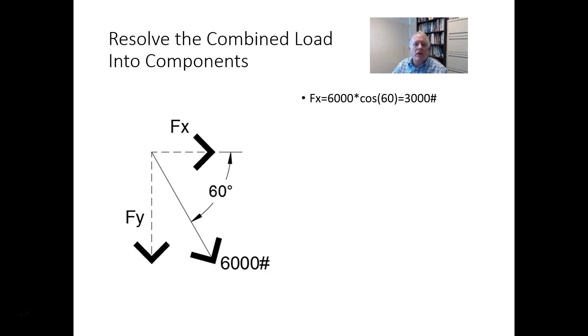So we have to calculate the horizontal and vertical components. The horizontal component is equal to the force itself times the cosine of the angle between the horizontal axis and the line of action of the force. So in this case, cosine of 60 is one-half, so it's half of 6,000.